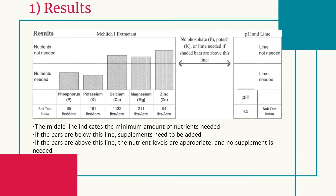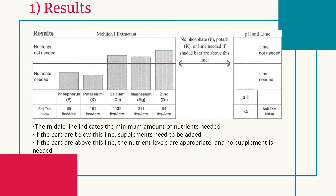The second section is the results section. This is what most homeowners are interested in when they have a soil test performed. You'll see that the results are shown in the form of a bar graph, and there is a line that runs through the middle of this bar graph. The line in the middle represents the minimum amount of nutrient needed for the crop to be healthy. In this example, you'll see that the phosphorus bar is below that middle line, which means that whatever fertilizer the homeowner applies will need to contain phosphorus. If you look at potassium, it is also below the middle line, so potassium will also need to be added. Calcium, magnesium, and zinc are all above this central line, so the soil has plenty of these nutrients and you do not have to add any more of them.